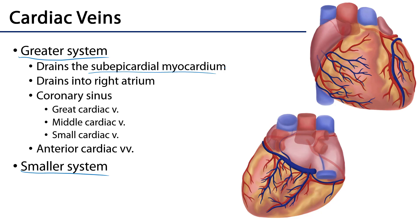All of this greater system drains into the right atrium by means of a coronary sinus. That coronary sinus occupies the coronary sulcus in between the diaphragmatic surface of the heart and the base of the heart, and it is fed by several tributaries. The first is the great cardiac vein, which occupies the anterior interventricular sulcus paired up with the anterior interventricular branch. It's usually superficial to the anterior interventricular branch and wraps around, found in the coronary sulcus, to drain directly into the coronary sinus.